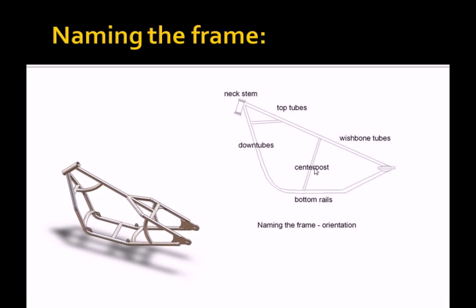The pair of bottom rails have the most serious bending and are welded to the neck stem at the front and the wishbone tubes at the rear, or side plates if you are building a swing arm frame. The down tubes are just one part of the bottom rails, the section that comes between the neck stem and the first big bend.